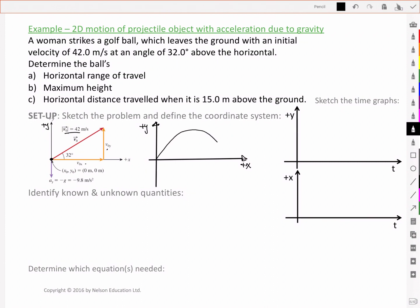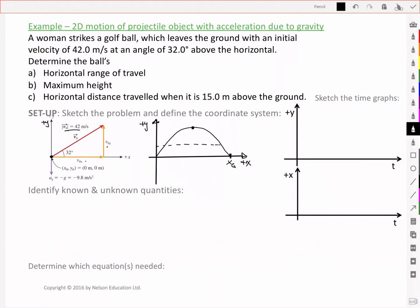Let's make a little sketch over here of just the motion itself. So it's going to be a parabolic motion and we're interested in a couple of things. We're interested in this range, this full range. I'm going to call that xg as we'll see. We're interested in this maximum height and we're interested in the horizontal distance when it is 15 meters above the ground.